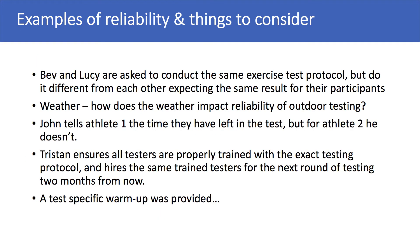Now let's look at some examples of reliability. Bev and Lucy are asked to conduct the same exercise test protocol, but they do it differently from each other while expecting the same results from their participants. This would be a form of inter-rater variability — they're being inconsistent in the way they deliver the test. Another example is weather: if on one day it's not raining and on day two of testing it is raining outside, this would be a confound that would affect the reliability of the testing.